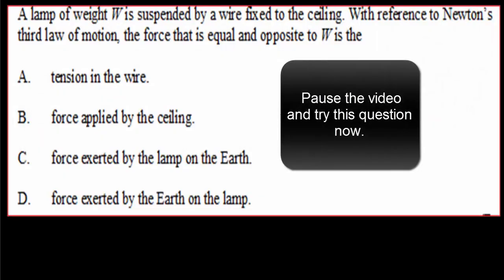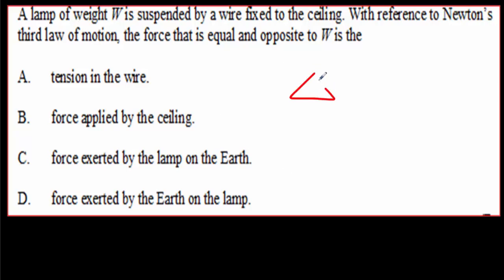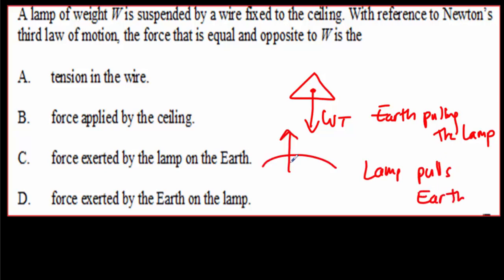If you understood that last example, this IB question is going to be very easy. Pause the video, try the question, come back for the answer. So, here's our lamp and there's a force on it that's the weight of the lamp. Well, the weight is really just the Earth pulling the lamp. The reaction force, we've got to interchange those two words. Lamp pulls earth. So, there is a force on the Earth pulling the Earth towards the lamp. So, the correct answer here is C.